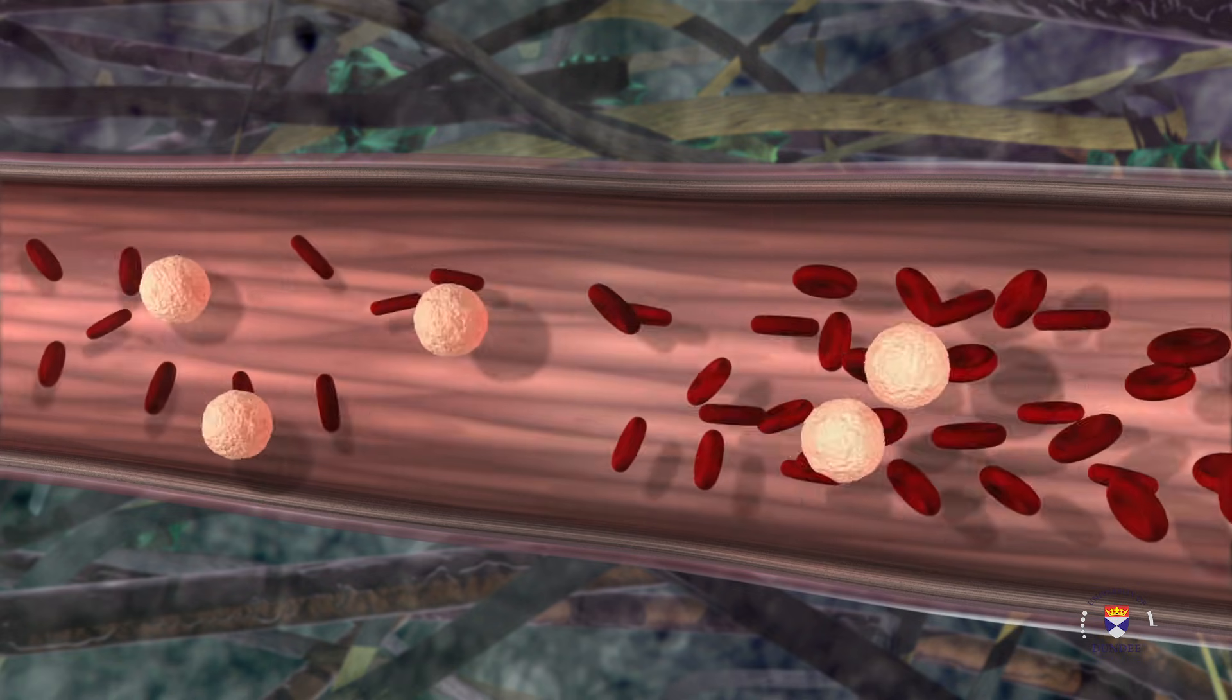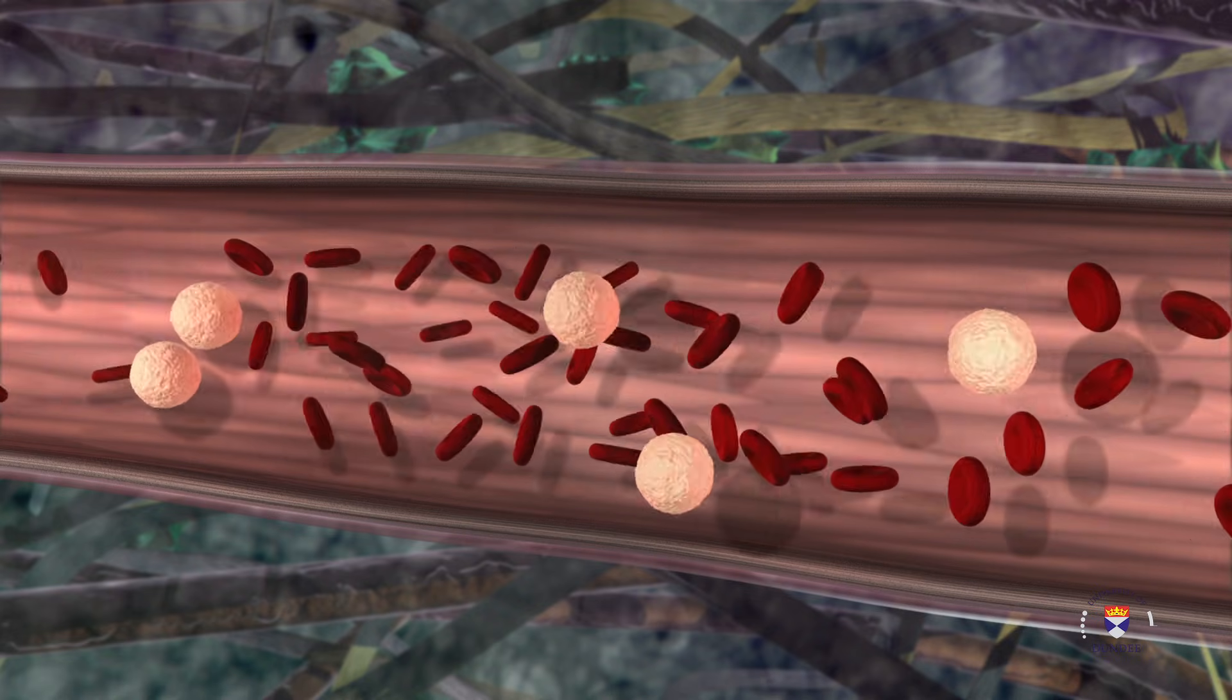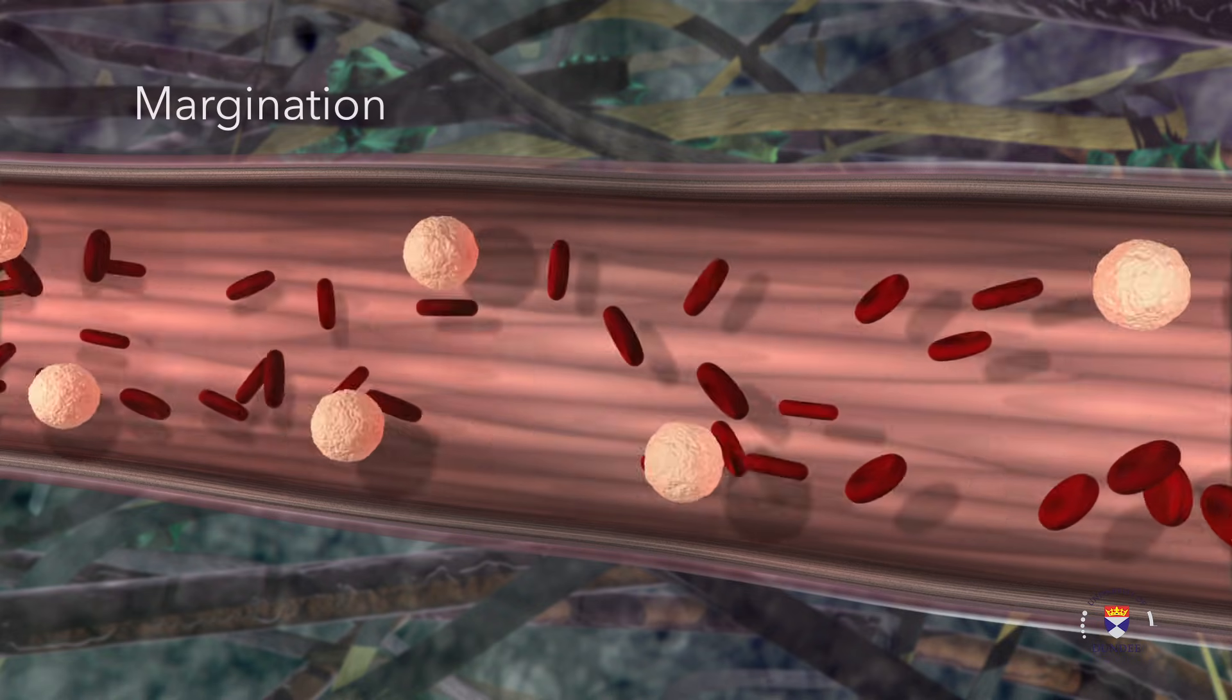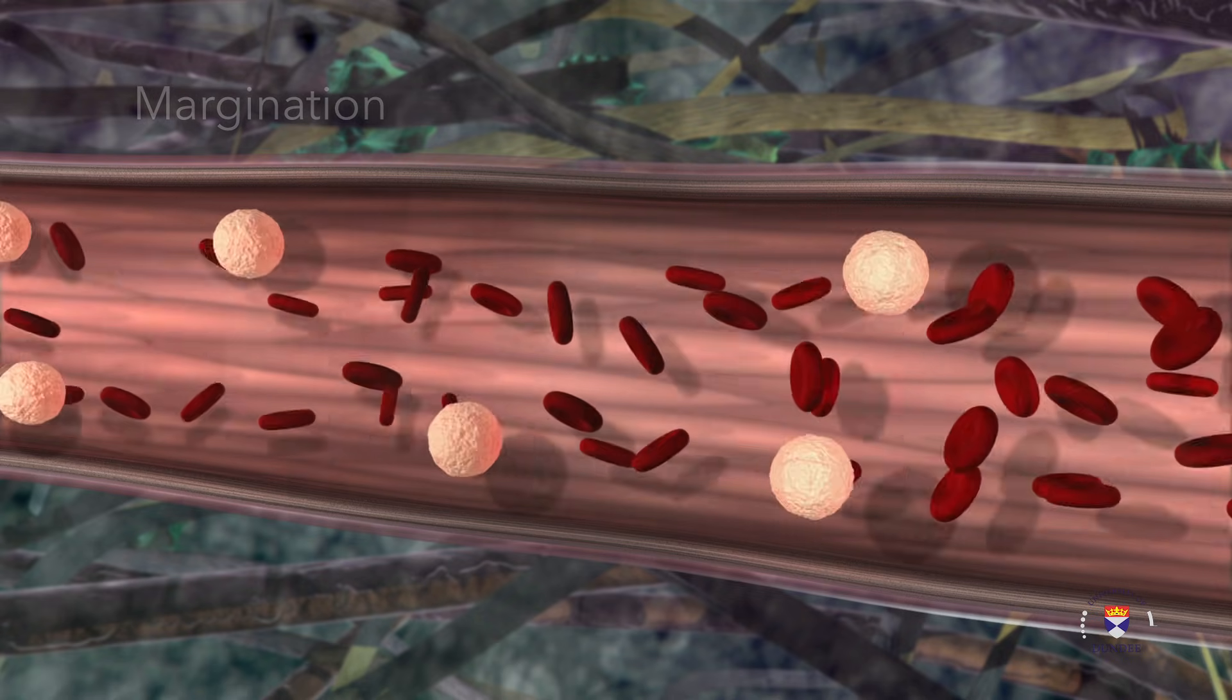Vasodilation causes the flow of blood to slow down and allows large white blood cells or leukocytes to move towards the walls of the vessel in a process called margination.